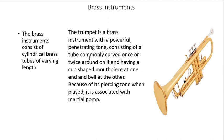Let's now proceed to the brass instruments. Brass instruments consist of cylindrical brass tubes of varying length. A good example is the trumpet — a brass instrument with a powerful, penetrating tone consisting of a tube commonly curved once or twice around itself, with a cup-shaped mouthpiece at one end and a bell at the other. Because of its piercing tone, it is associated with martial ceremonies such as military and graduation rites.